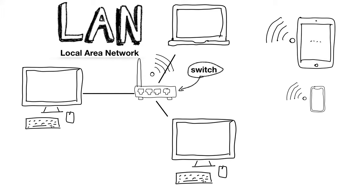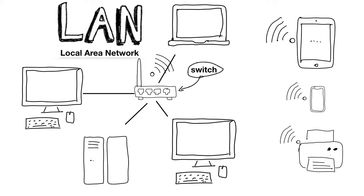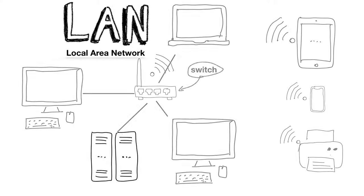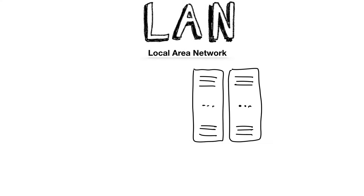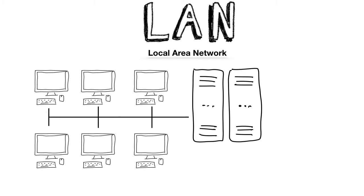LANs offer a lot of possibilities. You can connect a printer to the network that can be used by all computers. Or you could add a server. A server can be used as storage — all files are kept on the server. If people work on the other computers in the network, the so-called clients, they get their files from the server and send them back once they are done. That type of server is called a file server.